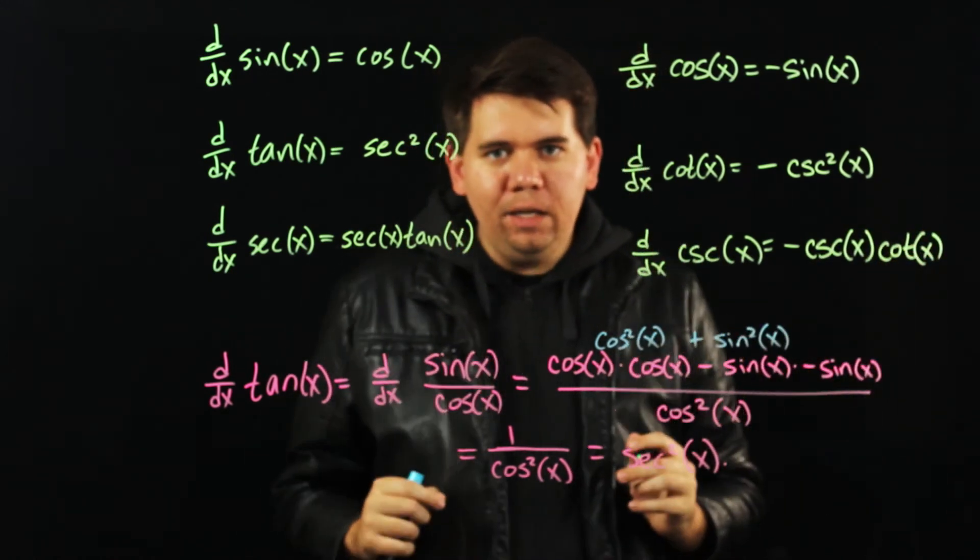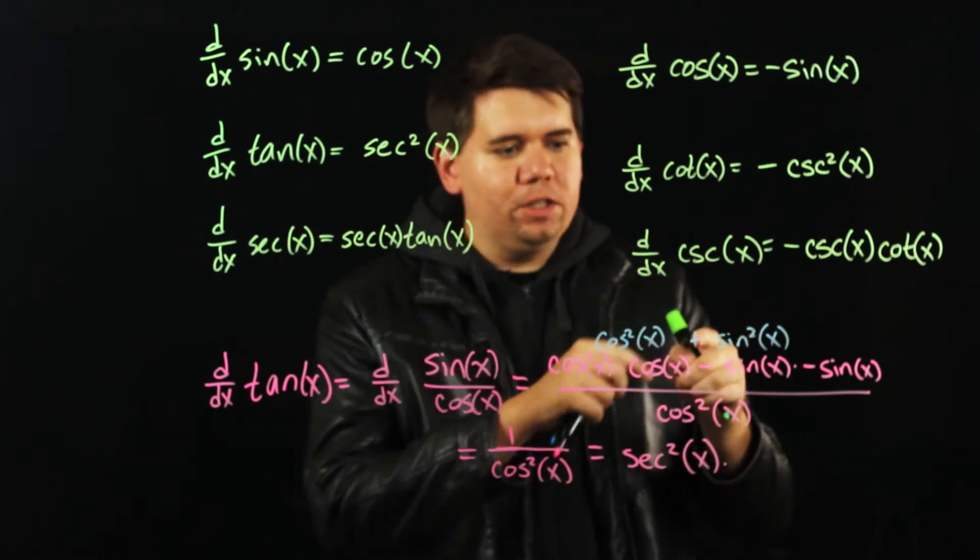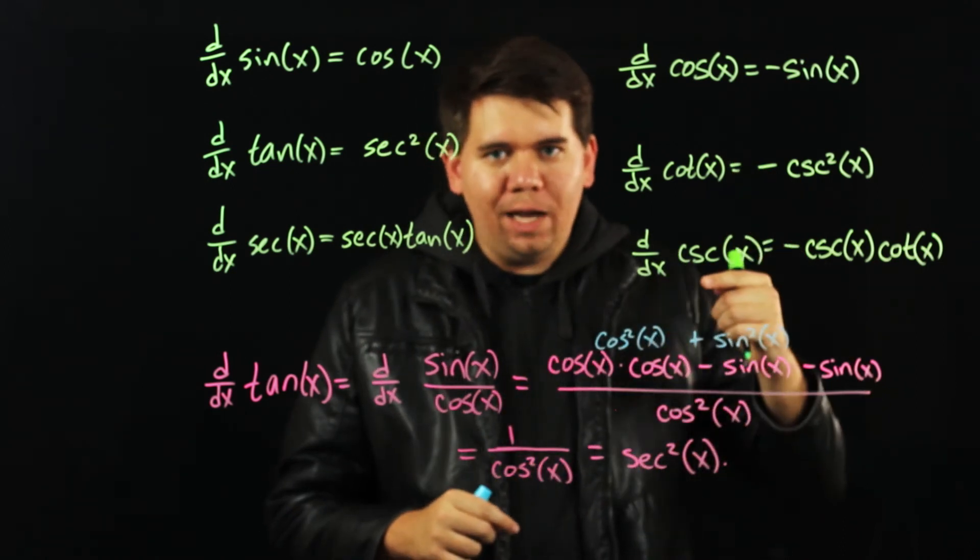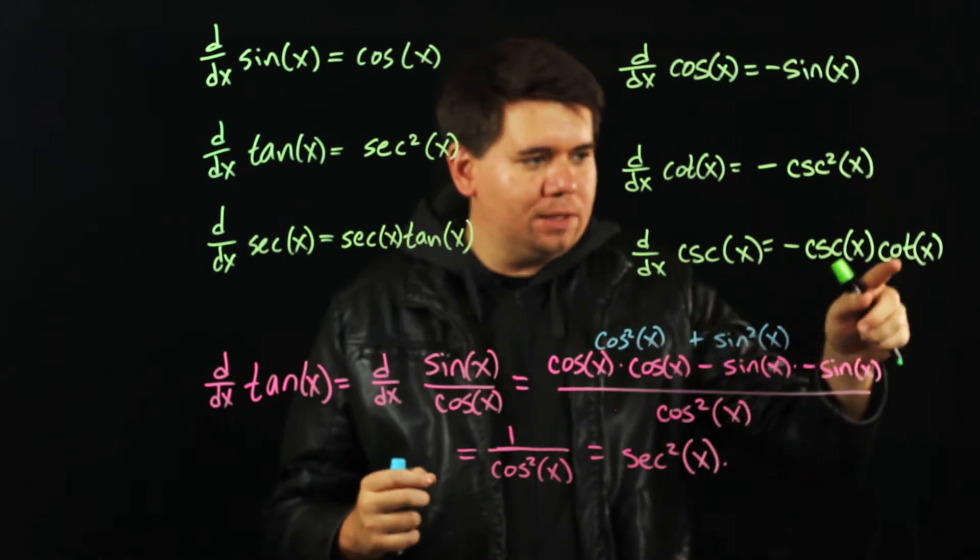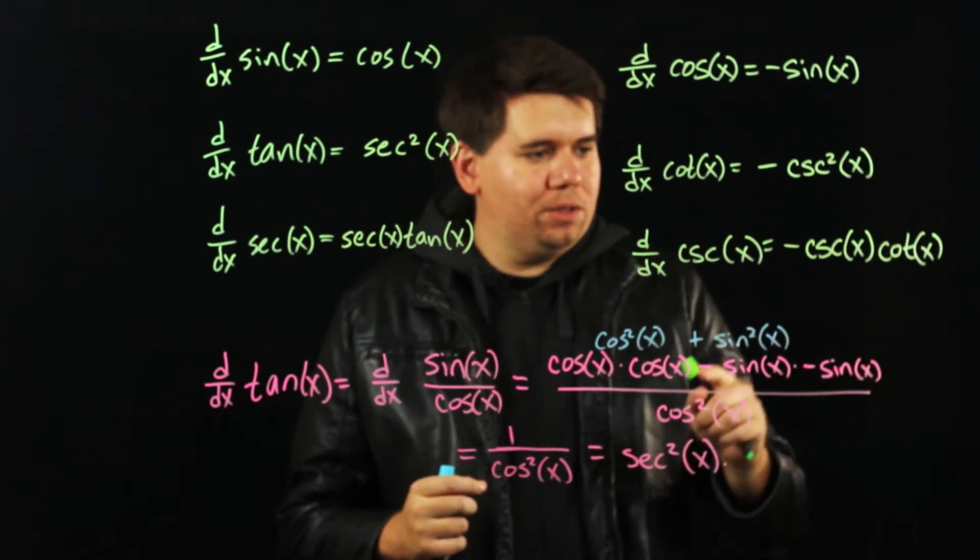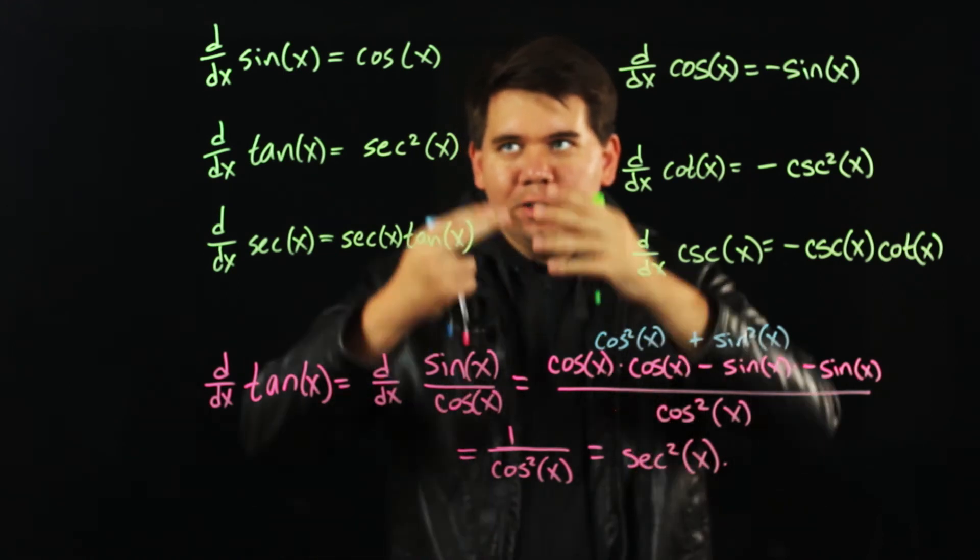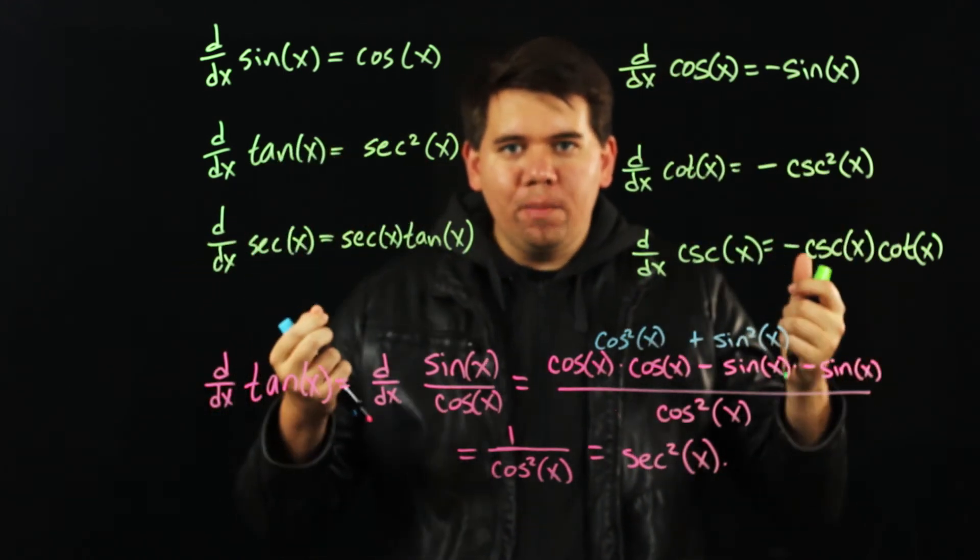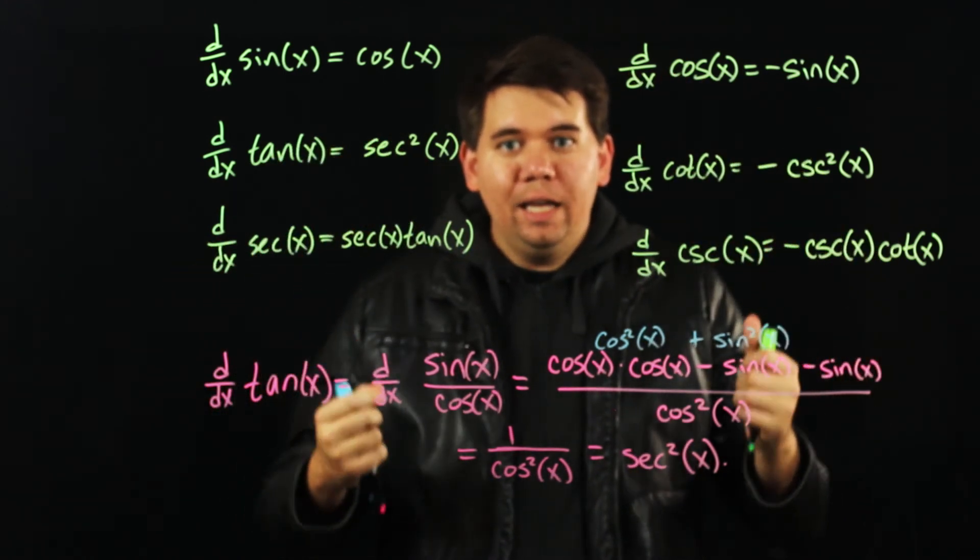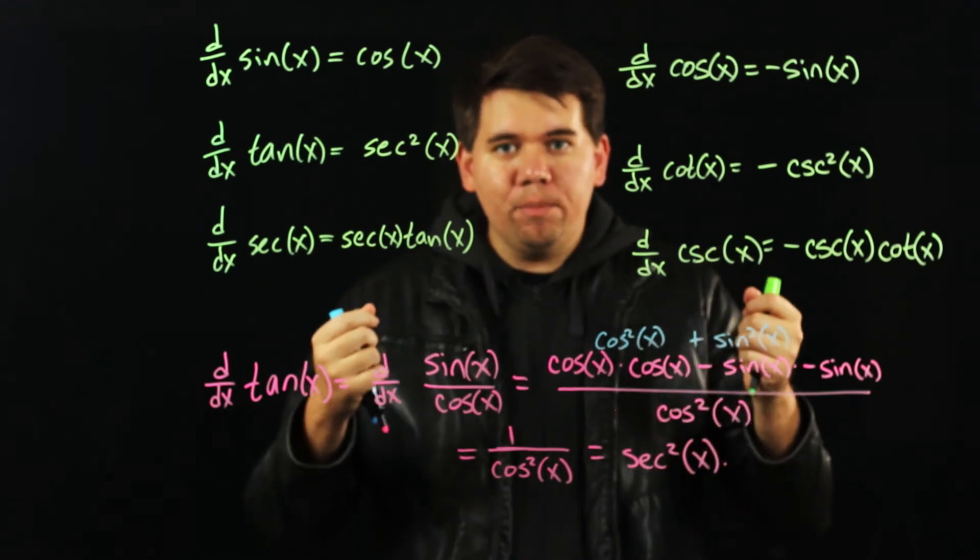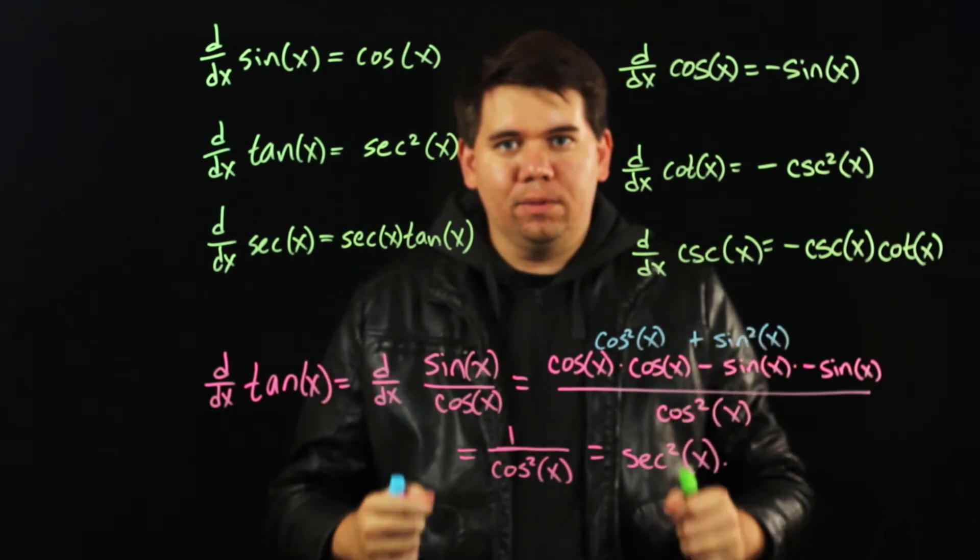Again, you can just verify any of these by thinking about what is the definition of cosecant? It's 1 over sine. Calculate the derivative of 1 over sine and you'll get something equivalent to negative cosecant of x times cotangent of x. So here we go. These are the formulas for our trig functions. It will be important that you commit these to memory so you're able to quickly use them in upcoming examples.